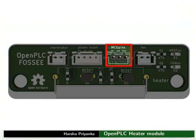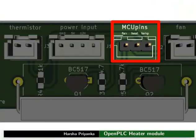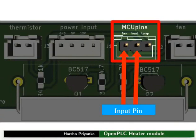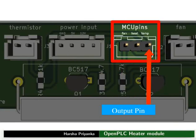We can find three MCU — that is, microcontroller — pins on the PCB. They are marked as fan, heat, and temp. Fan and heat are the input pins for the heater module, whereas temp is an output pin.